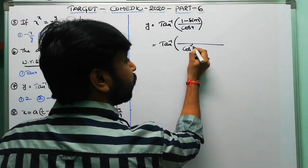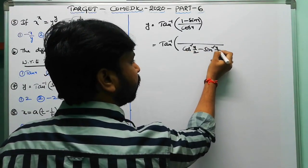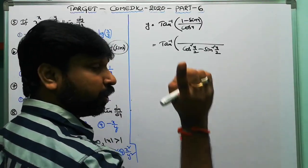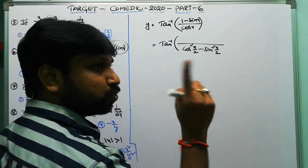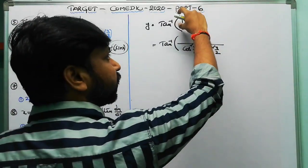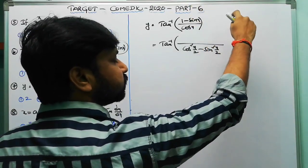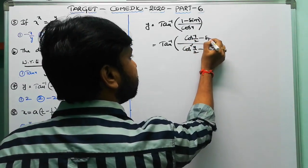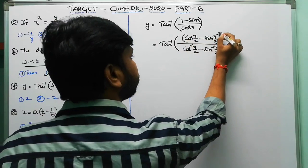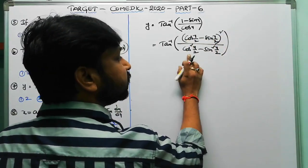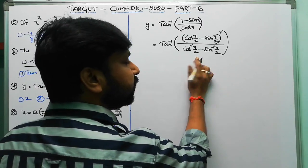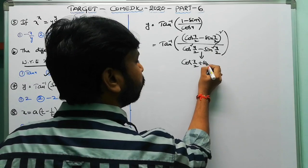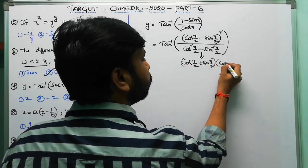So sec x − tan x equals (1 − sin x)/cos x. The denominator cos x can be written as cos²(x/2) − sin²(x/2), and the numerator 1 − sin x equals cos²(x/2) + sin²(x/2) − 2·sin(x/2)·cos(x/2), which is of the form (a−b)², giving (cos(x/2) − sin(x/2))². The denominator is of the form a²−b² = (a+b)(a−b).